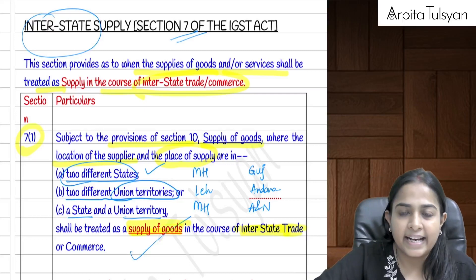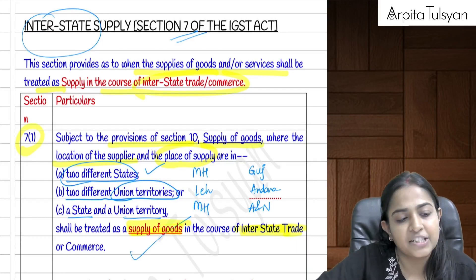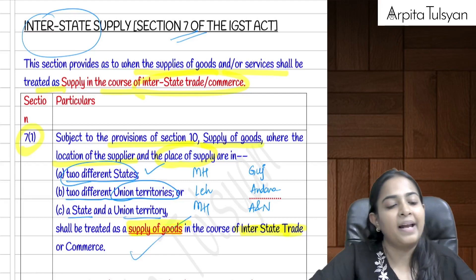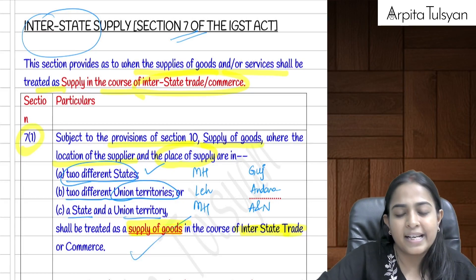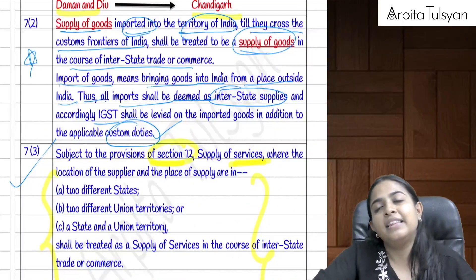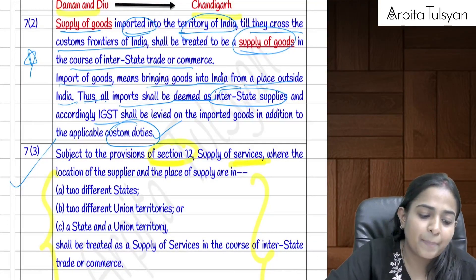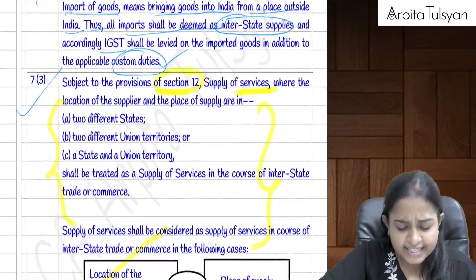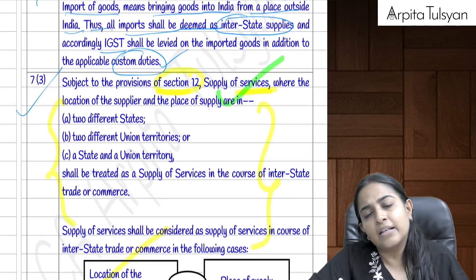Section 7 covers interstate supply. Section 7(1) states that supply of goods is interstate when the location of the supplier and place of supply are in two different states, two different union territories, or one state and one union territory. Section 7(2) covers import of goods: goods imported into India are treated as interstate supply until they cross India's customs frontiers, attracting IGST along with customs duty.